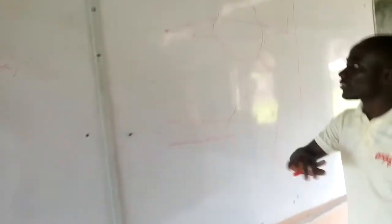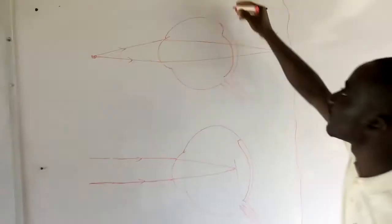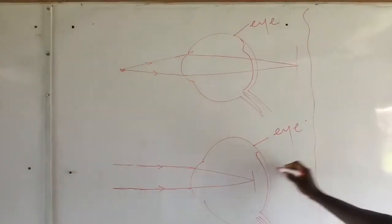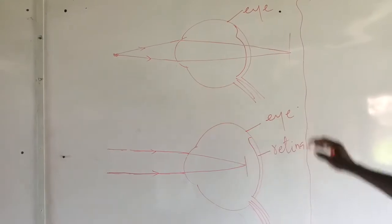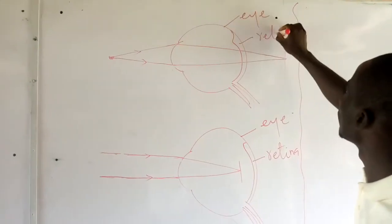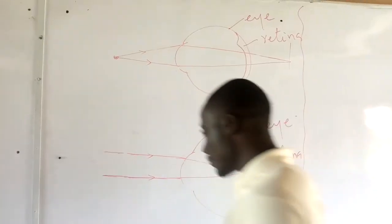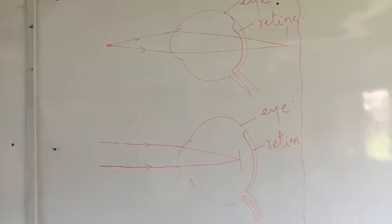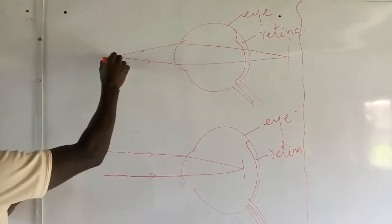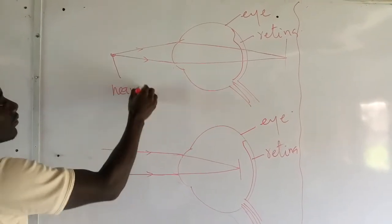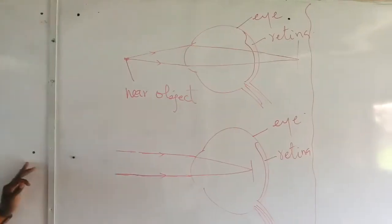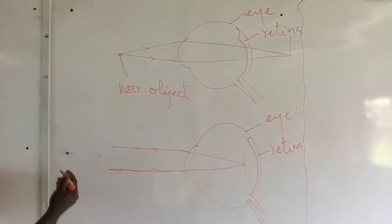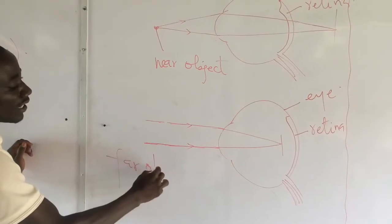Now let's look at these diagrams here. Let's assume that this is the eye, and the retina is found inside as the screen of the eye. We all know that before one can see, light must fall on an object. Now let's say this is a near object — meaning that object is very close to the eye. And with this other diagram, we can see that the object is far — a far object.